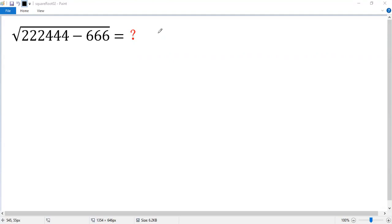Let's see how to find the square root. If we directly calculate the difference, we will get square root of 221,778. Wow, I don't know the square root. So let's do it in a smart way.